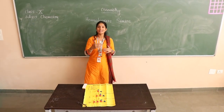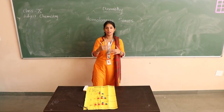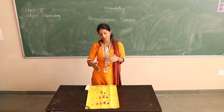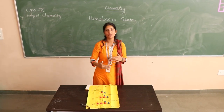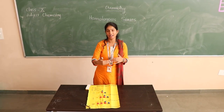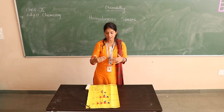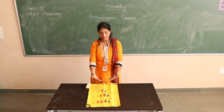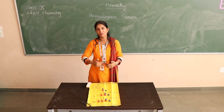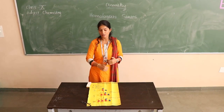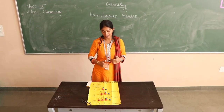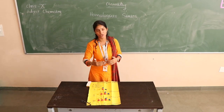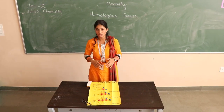So, a homologous series is a series where the functional group attached to the carbon atoms remains the same, but it is just the number of carbon atoms which we add in each series. This clay model is the best example — you can easily understand how we can find the different structures and how different carbon atoms are combined with different functional groups. Thank you.